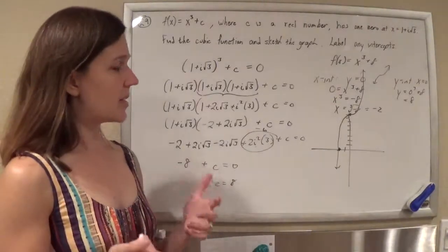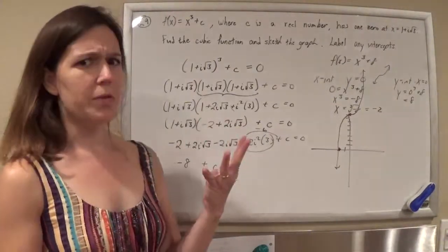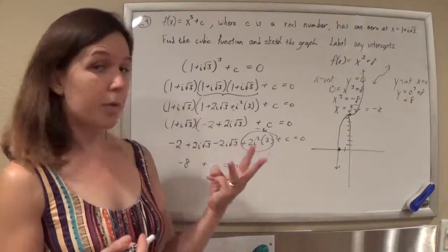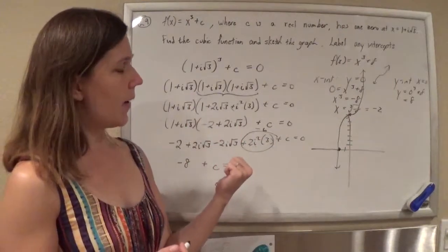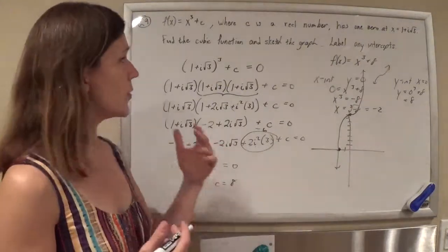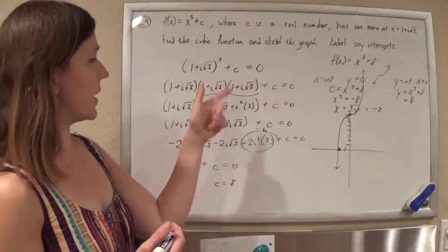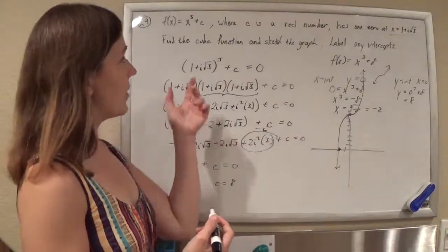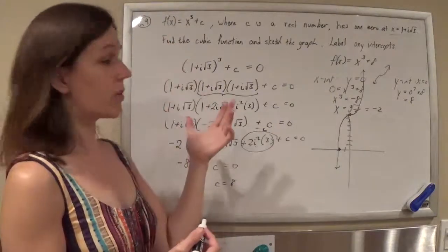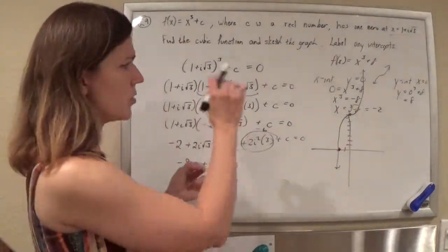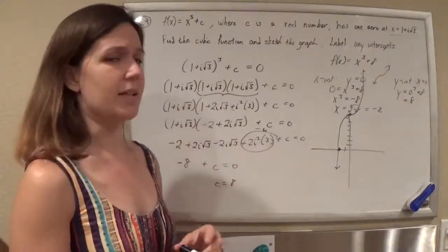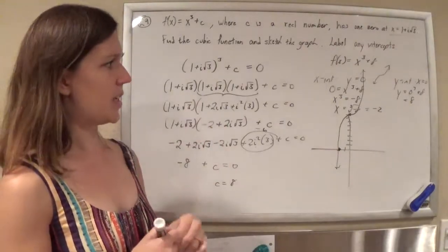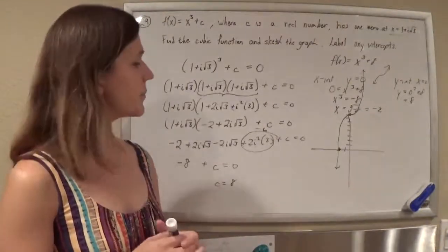If you look at the answers on the CSET website, the four-point response does it in a long and convoluted way. The three-point response I like better — they did it the same way we did. They just didn't write any sentences. So if you just add a quick sentence at the beginning saying 'since 1+i√3 is a zero, by definition it should make f(x) equal 0,' and a little bit of explanation for the intercepts, I think that works beautifully.